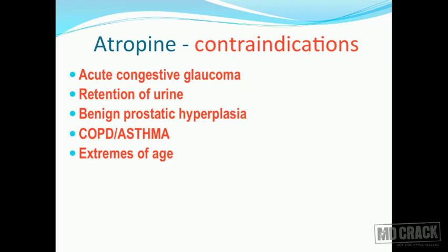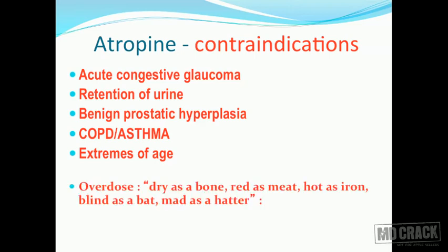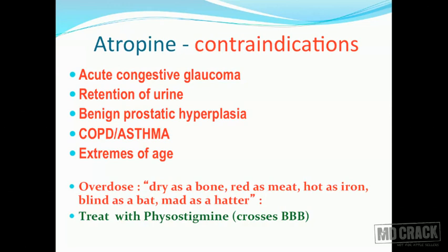I would like to remind you of a very important quote which describes atropine overdose. It's called: dry as a bone - there is extreme dryness; red as meat - because there is vasodilation and dissipation of heat producing redness; hot as iron - reminding you of hyperpyrexia in atropine overdose; blind as a bat - because the patient suffers from blurriness of vision; and mad as a hatter - because atropine crosses the blood-brain barrier and stimulates the CNS, leading to confusion and disorientation.